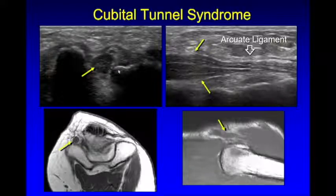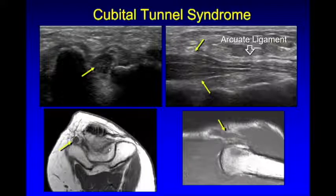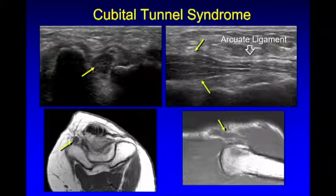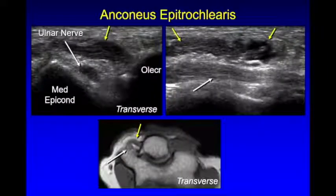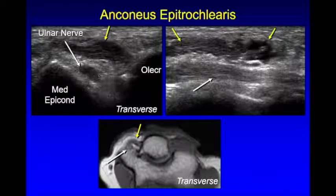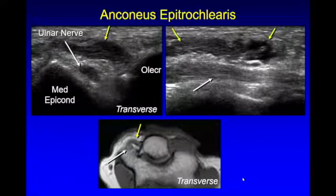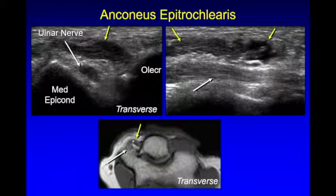Here is a case of an anconeus epitrochlearis. If you have extra muscle sitting here, this normal variant can cause secondary compression. A pitfall is that you can only really identify this muscle with the elbow completely extended, because if you flex the elbow the triceps is pulled up into this space and you cannot differentiate the anconeus epitrochlearis from the triceps. There should be no muscle between the olecranon and the epicondyle with the elbow fully extended. Here is the normal anconeus and here is the accessory anconeus epitrochlearis.